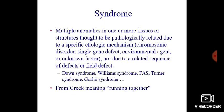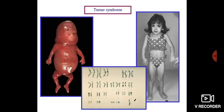A syndrome is multiple anomalies in one or more tissues or structures thought to be pathologically related due to a specific etiologic mechanism such as chromosomal disorder, single gene defect, environmental agent, or unknown factor — not due to a related sequence of defect or field defect. Examples include Down syndrome, Williams syndrome, fetal alcohol syndrome, and Turner syndrome. From the Greek, syndrome means 'running together.' This figure shows an example of Turner syndrome.